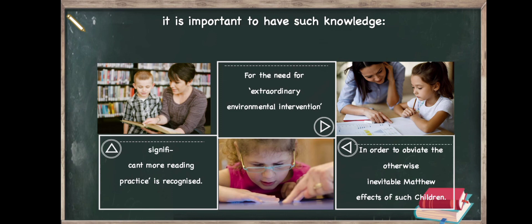The Matthew effects terminology was proposed by Keith Stanovich in 1986 to describe incremental literacy differences that develop between individuals who have advantageous early educational experiences and those who do not. So that children will not be left behind in reading progress, there should be environmental intervention both in the family, the community, and at school to support the learning progress of all children.